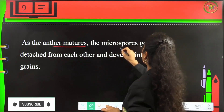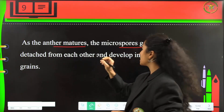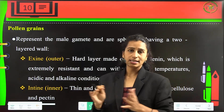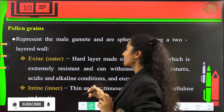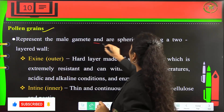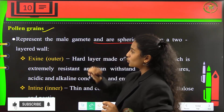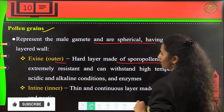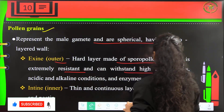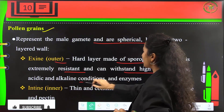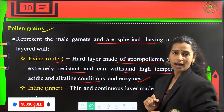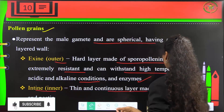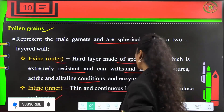As the anther matures, the microspores get detached from each other and develop into pollen grains. Each unit of the tetrad structure will develop into a single pollen grain. Pollen grains represent male gametes and are spherical, having a two-layered wall: the exine, which is the outer hard layer made up of sporopollenin, which is extremely resistant and can withstand high temperatures, acidic and alcoholic pH conditions, and enzymes. The intine is the inner thin and continuous layer made up of cellulosic wall and pectin.